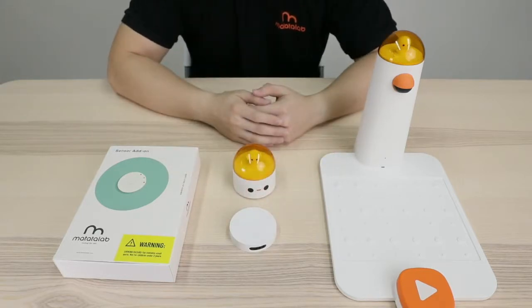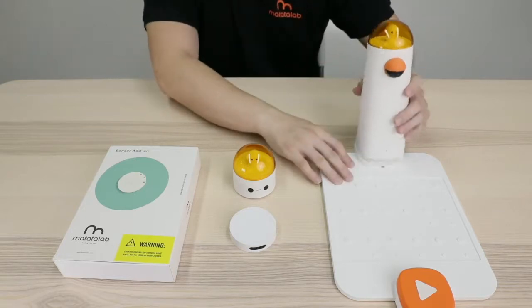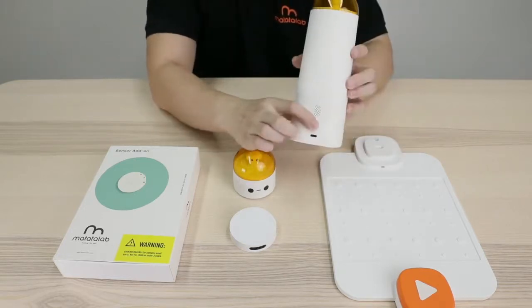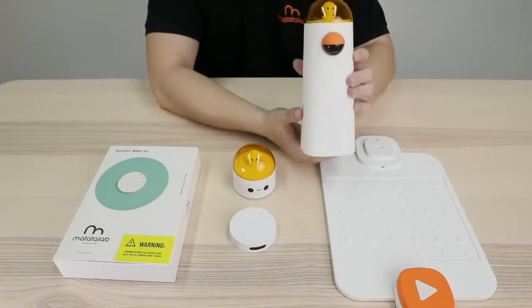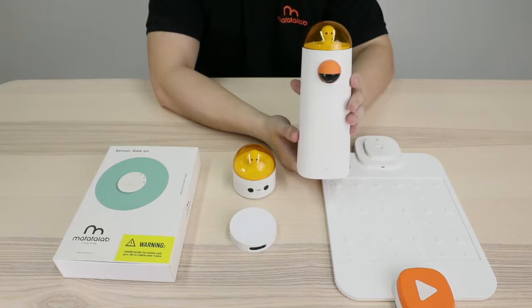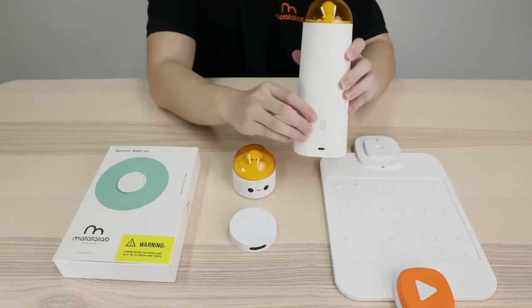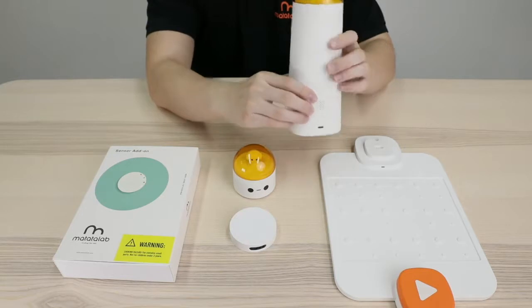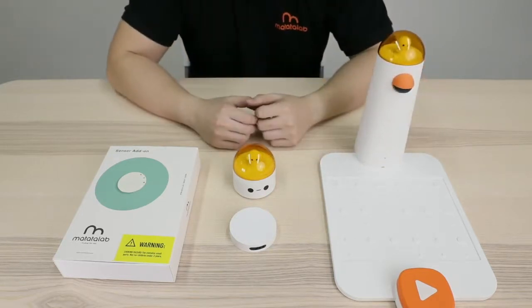After successfully connecting the controller and the matata bolt, we turn on the control tower and quickly clicked its power button three times to enter its connection state.